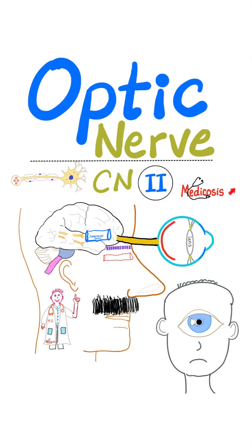It's Metagosis Perfectionalis, where medicine makes perfect sense. Today we'll talk about the optic nerve, which is the second cranial nerve. It is a sensory nerve — specifically, a special sensation known as vision.